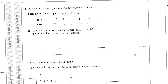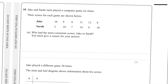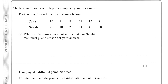Question ten asks who had more consistent scores, Jake or Sarah. Jake's scores are 10, 9, 8, 11, 12, 8 — not far apart. Sarah's go from 2 to 14 — a big spread. Jake was more consistent because his scores are closer together.